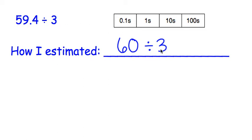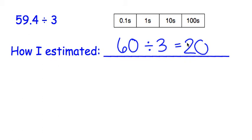So let's do this division. 6 divided by 3 is 2, and then we're going to bring that 0 over. So our answer to this problem is going to be in the tens place, because 20 is in the tens place.